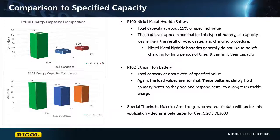On the other hand, the lithium ion batteries are still operating at about 75% of their listed capacity. These batteries simply hold capacity better and respond better to being charged consistently. These are just some of the battery characteristics you can test with a DL3000 series electronic load from Rigol.